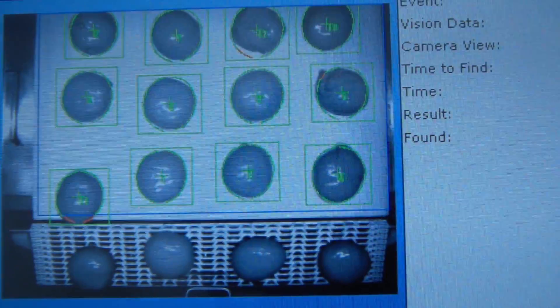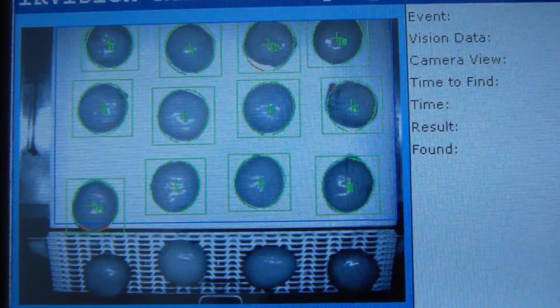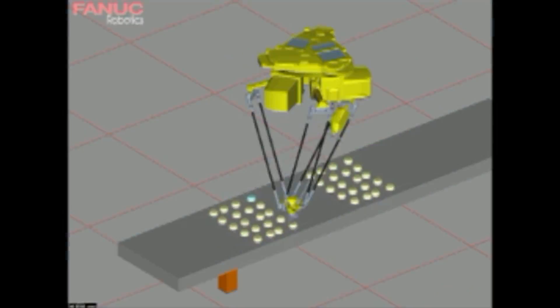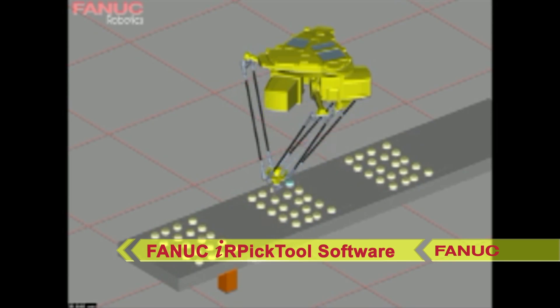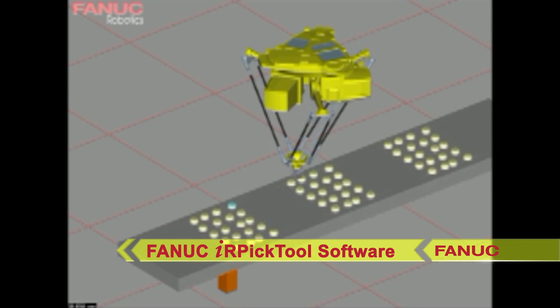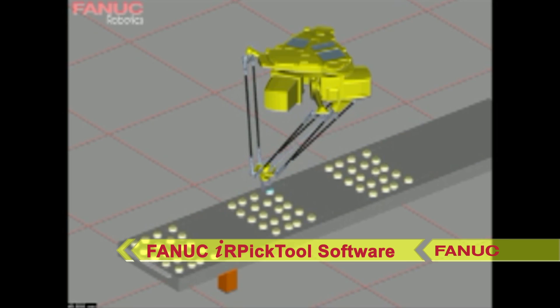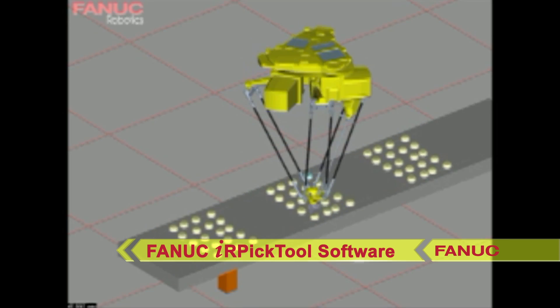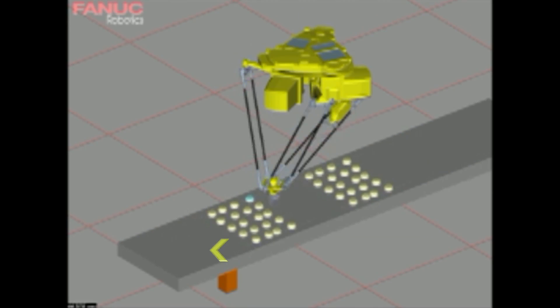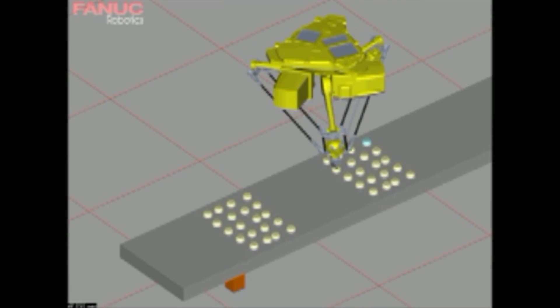FANUC IRPICTOOL is a software simulation product that simplifies the setup of complex high-speed picking and packing conveyor tracking by allowing the end-user to visualize, engineer, test, and evaluate a high-speed FANUC robotic system before building.